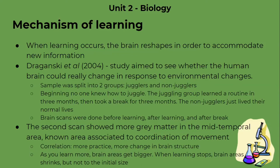The second scan showed more gray matter in the mid-temporal area, which is known to be associated with coordination of movement. A correlation was also seen in the results: the more you practice, the more change in brain structure. As you learn more, brain areas get bigger, and when learning stops, brain areas shrink — but not to the initial size. Those who trained more had a bigger gray matter overall.